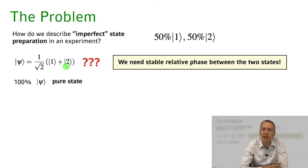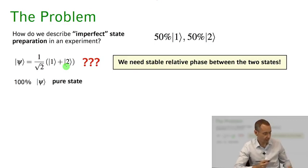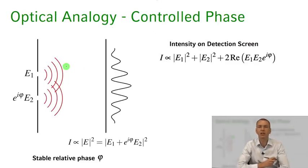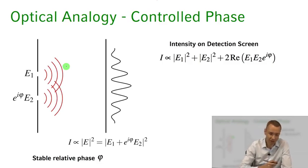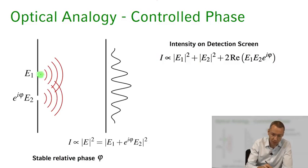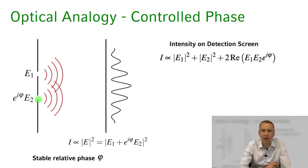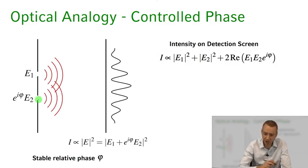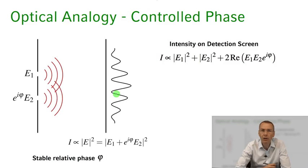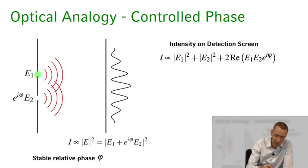You might ask: does this phase really matter in describing the quantum states we have? Let me give you an analogy — an optics problem you're all familiar with: the double slit problem. We have light fields emerging from slits one and two, with circular waves being emitted by those slits. Those waves interfere in the far field and form our beautiful intensity pattern — the double slit interference pattern.